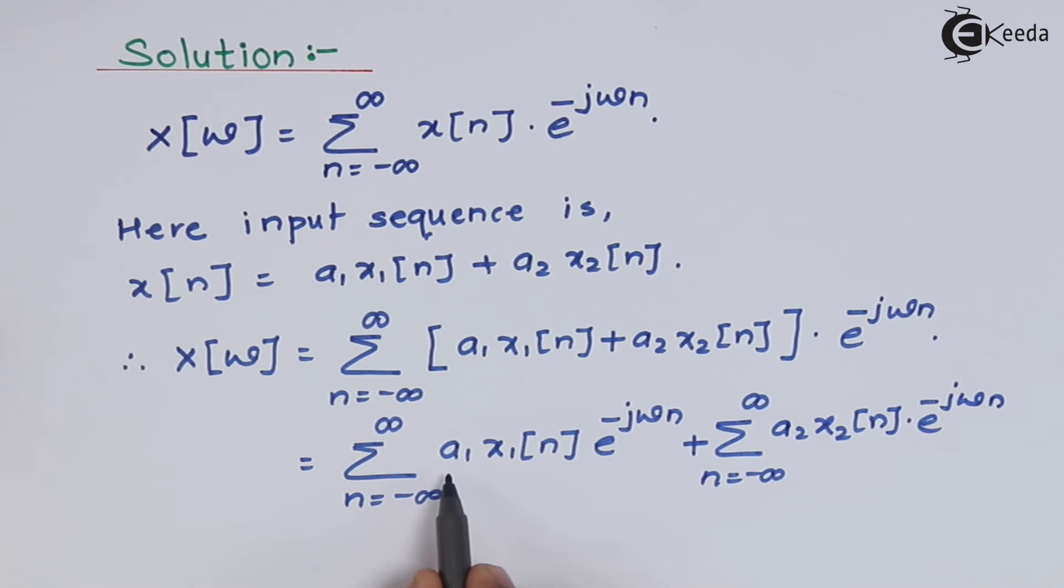In both cases my a1 and a2 are constants, so I will take them outside. And after that what is remaining inside this bracket or inside this summation, we will only have x1[n]·e^(-jωn), and in the second summation we will have x2[n]·e^(-jωn).